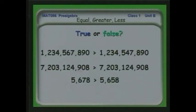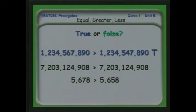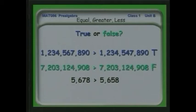What about these? 1,234,567,890 is greater than 1,234,547,890 — that's true, because we see that in the thousands we have 567,000 on the left and 547,000 on the right. What about 7,203,124,908 is greater than 7,203,124,908 — true or false? False, obviously they're equal. How about 5,678 is greater than 5,658 — that's true.